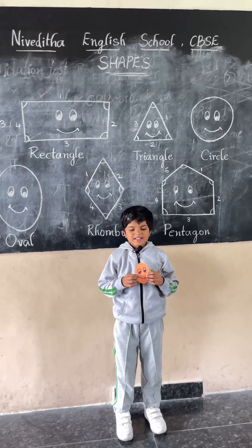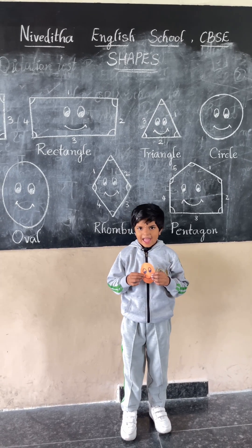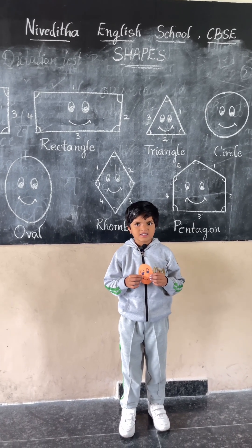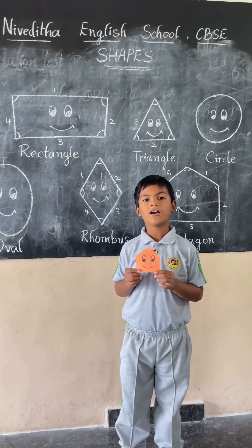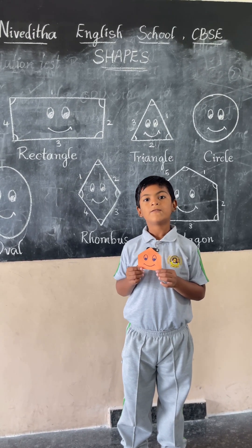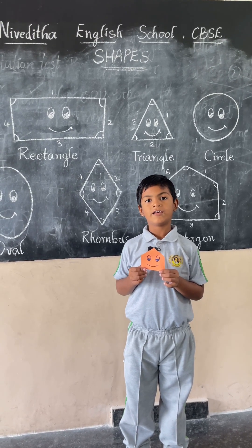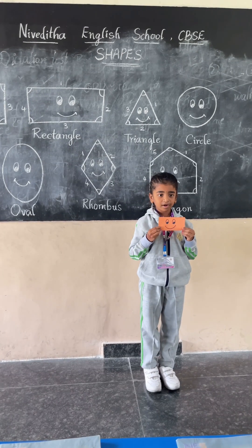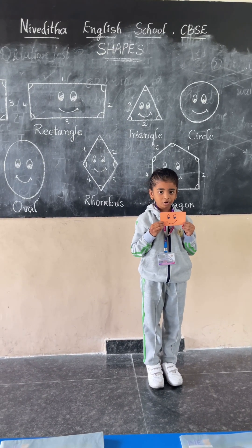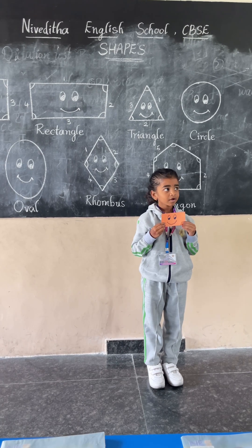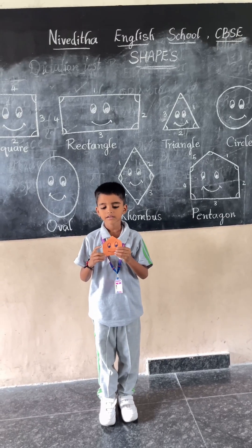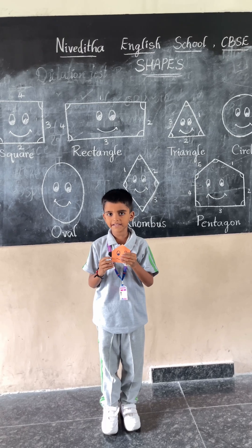This is a pentagon. It has five sides and four corners. This is a rectangle. It has four corners and four sides. This is a pentagon. It has five sides.